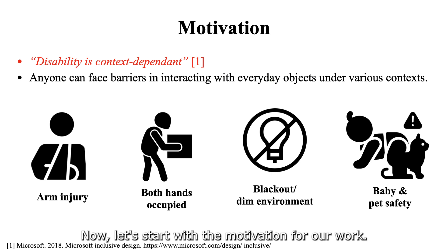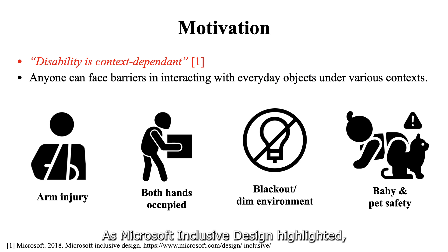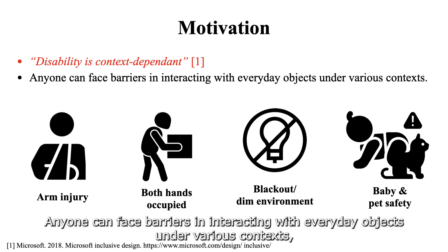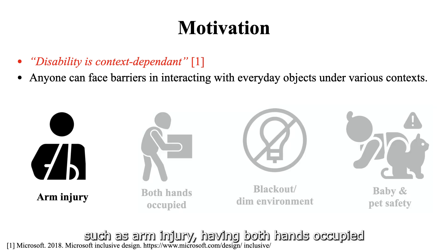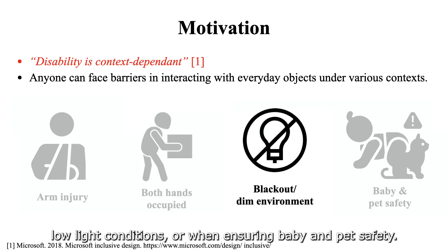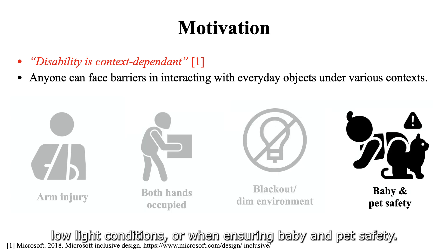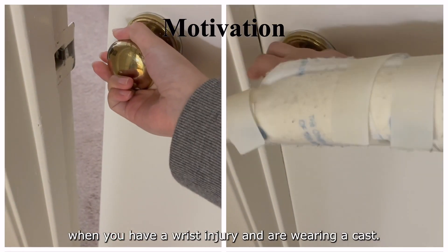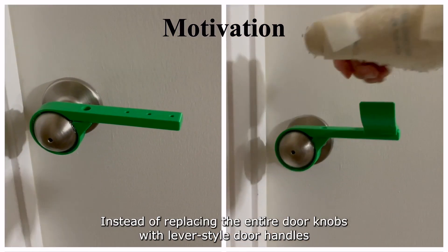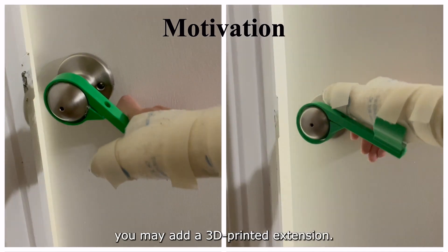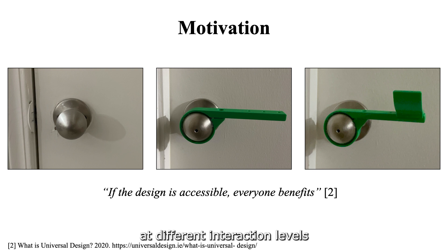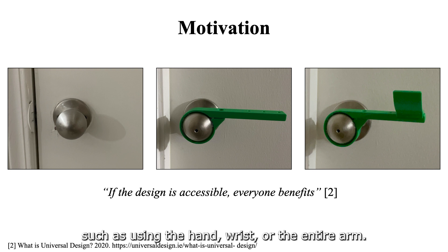Now let's start with the motivation for our work. As Microsoft Inclusive Design highlighted, disabilities can be context-dependent. Anyone can face barriers in interacting with everyday objects under various contexts, such as arm injury, having both hands occupied, low-light conditions, or when ensuring baby and pet safety. A typical doorknob can suddenly become hard to operate when you have a wrist injury and are wearing a cast. Instead of replacing an entire doorknob with lever-style door handles, you may add a 3D-printed extension. 3D assistive augmentations can address barriers under different contexts at different interaction levels, such as using the hand, wrist, or the entire arm.